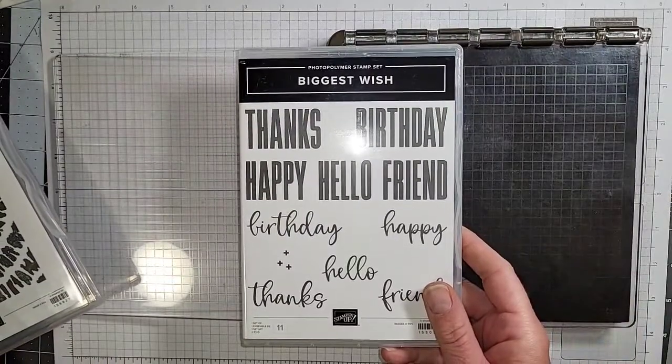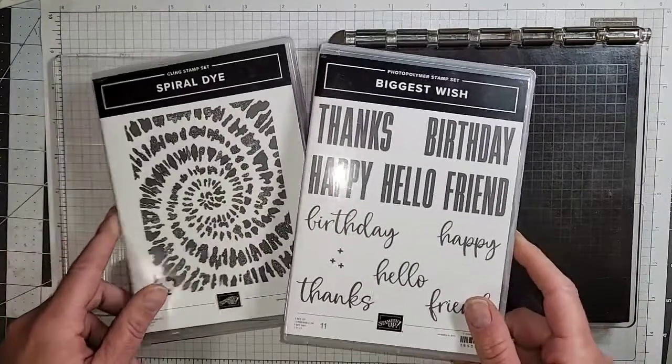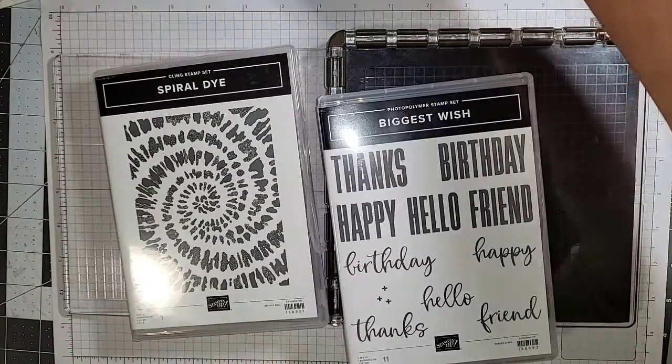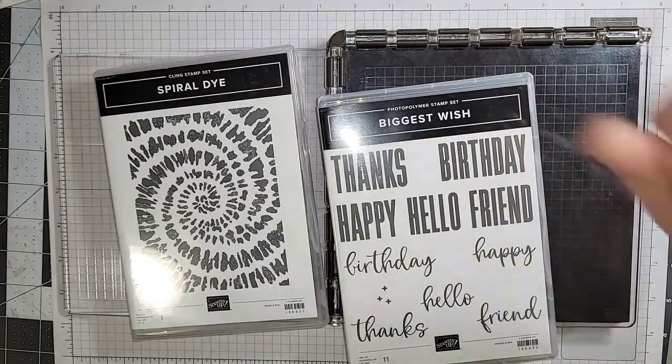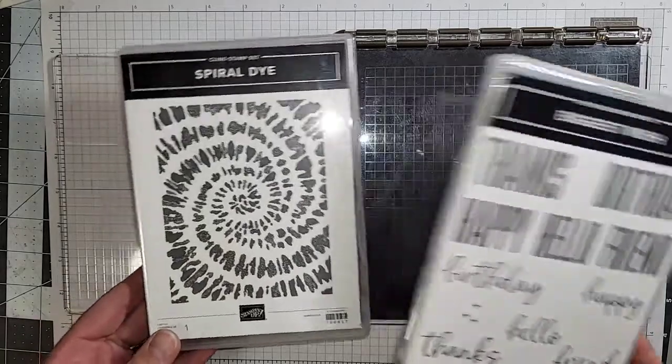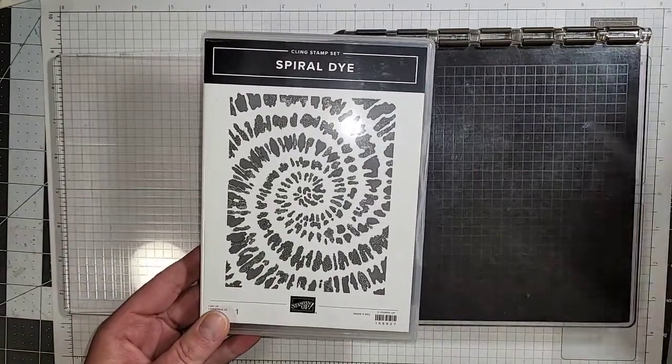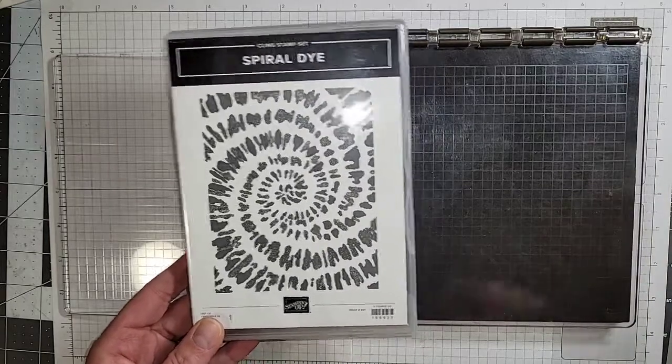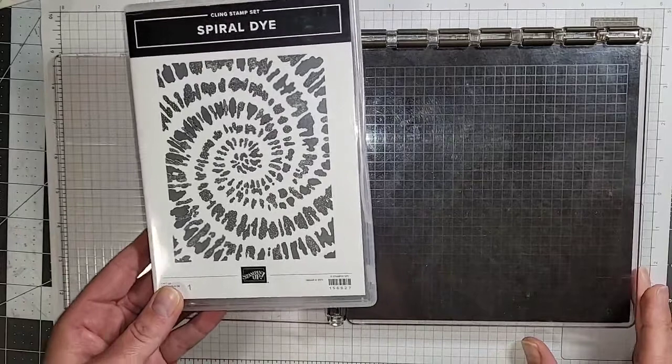Tonight we're going to use the Spiral Die and we're also going to use Biggest Wish. These are both really awesome stamp sets that can be found in the brand new annual catalog. This background stamp is one that I overlooked the first few times I looked through the catalog, but I'm so happy that I've added it to my collection and I'll show you why in just a minute.